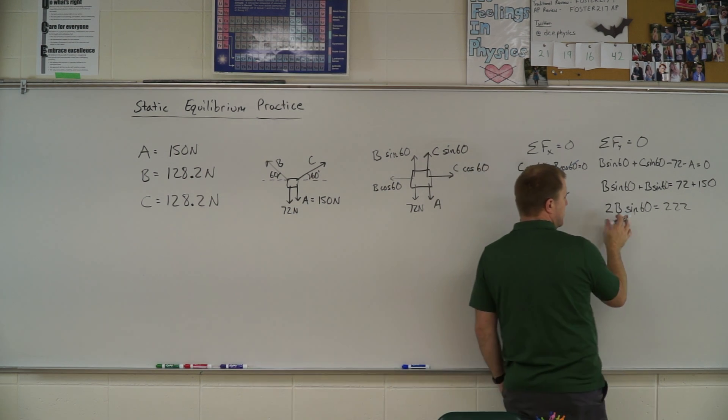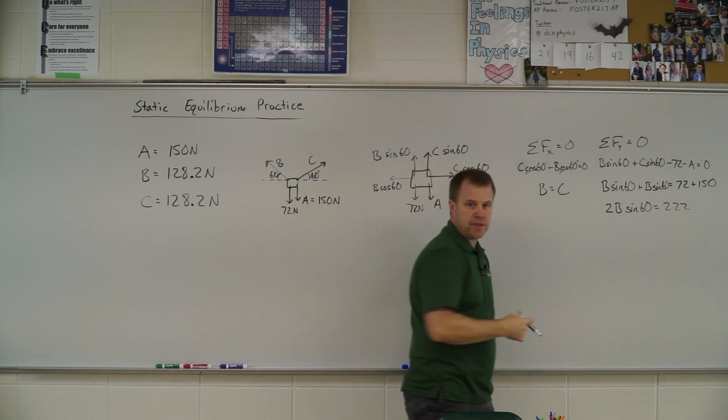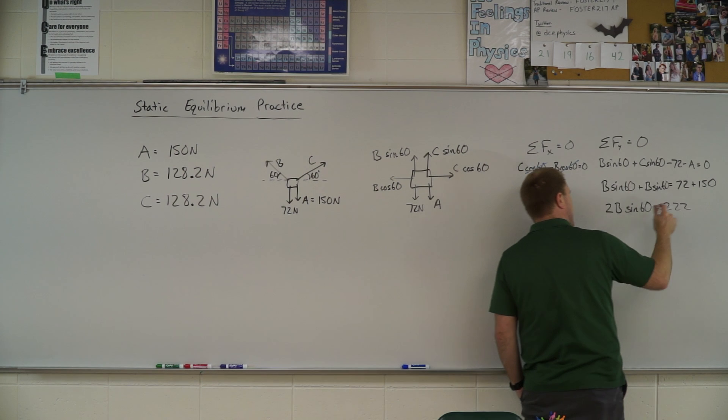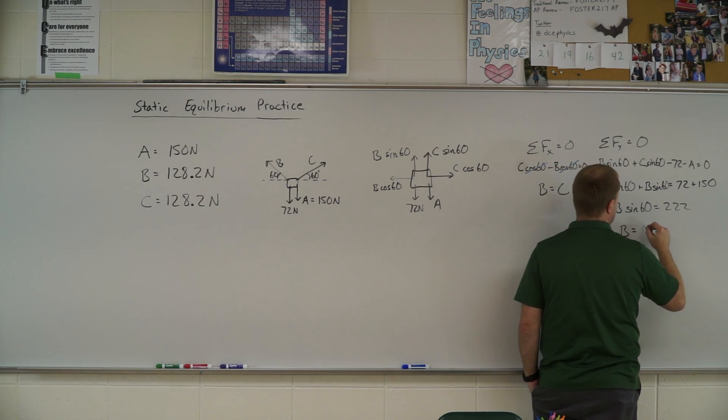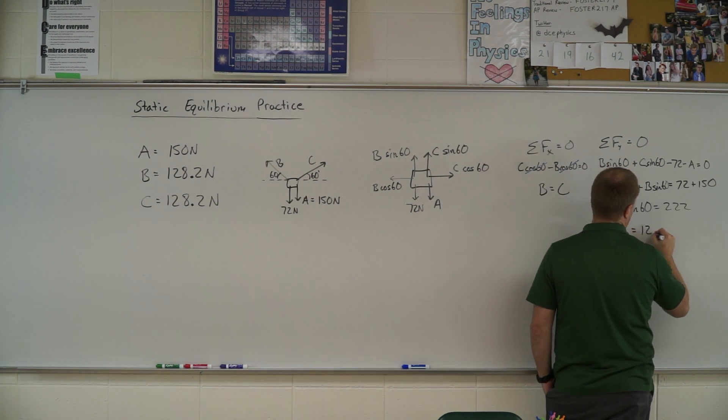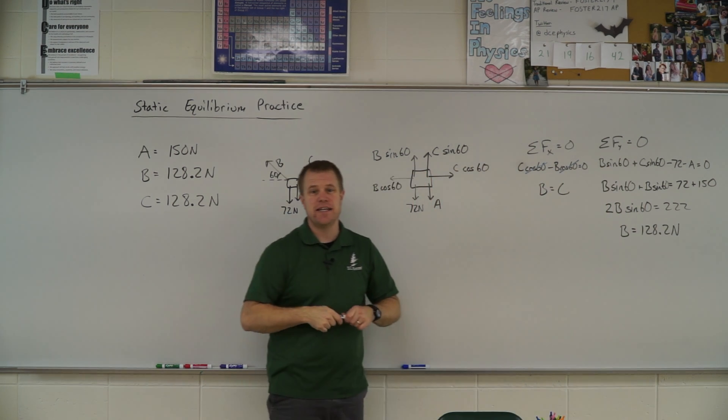Do a little bit of algebra here. So 2 times the sine of 60, type that in your calculator, divide it over to the other side, and you end up with B is equal to that 128.2 Newton number. And if you know B, you automatically know C.